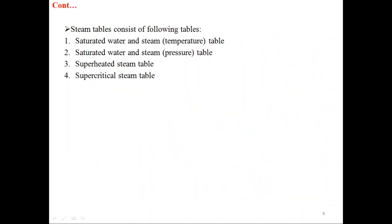Steam tables consist of the following tables: first is saturated water and steam temperature-based table; second is saturated water and steam pressure-based table; third is superheated steam table; fourth is supercritical steam table.